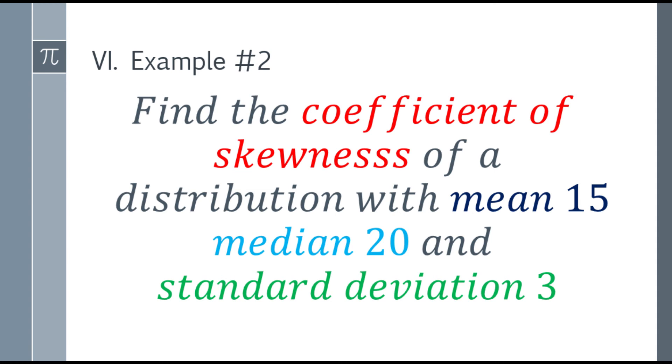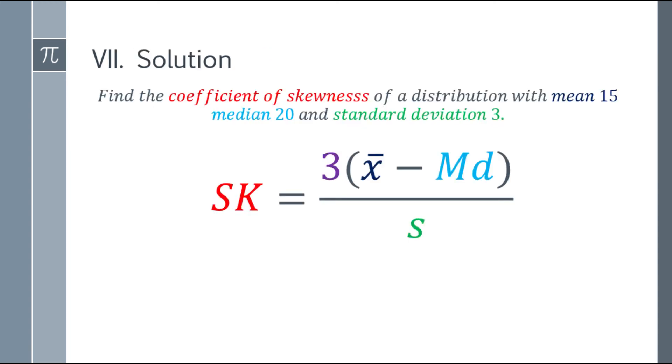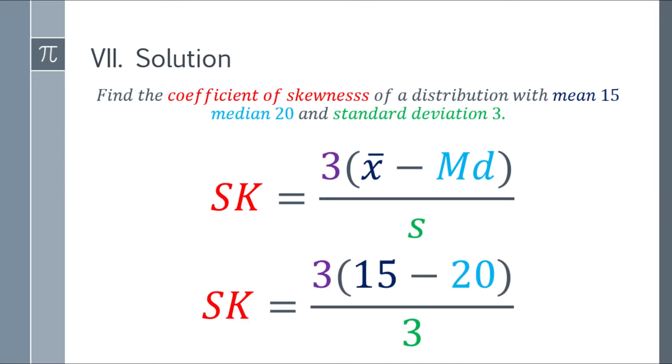So same lang naman din siya. Lagay mo yung formula. Lagay natin yung mga, substitute natin yung mga values. So we have 3 times the quantity 15 minus 20. At the denominator, that will be 3.